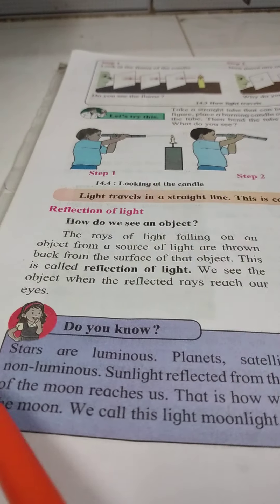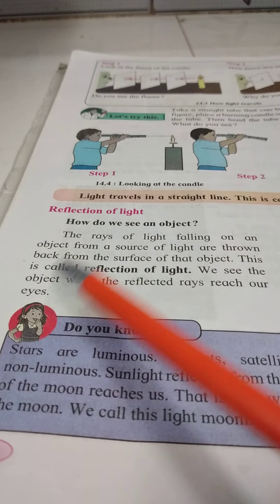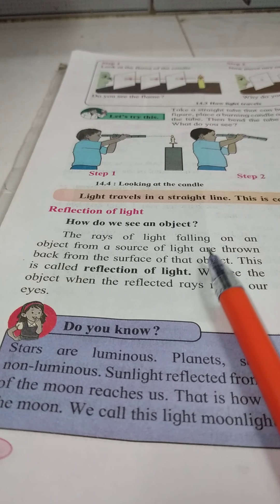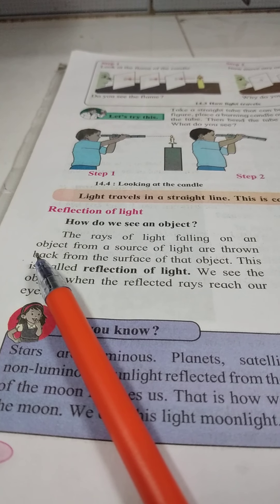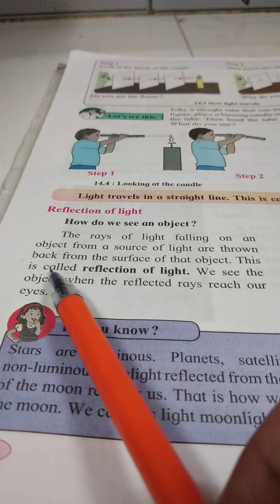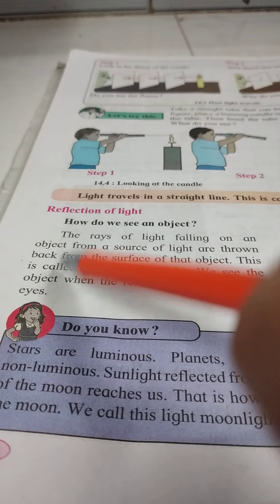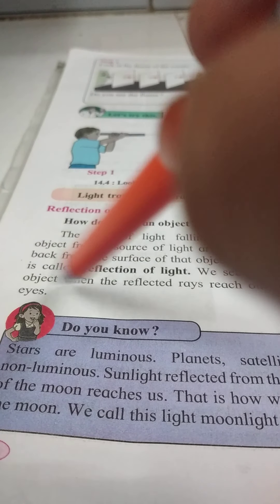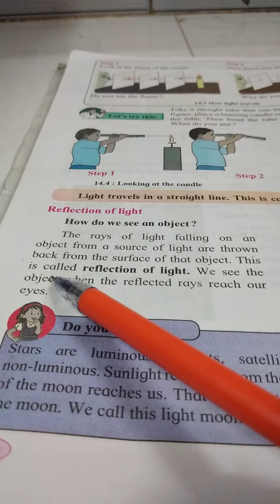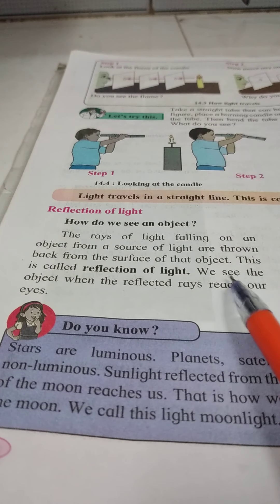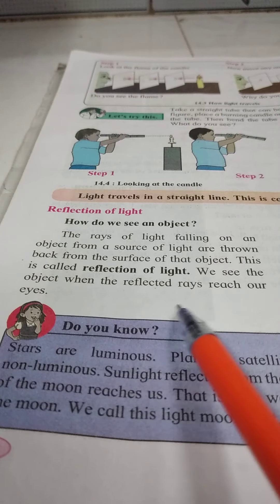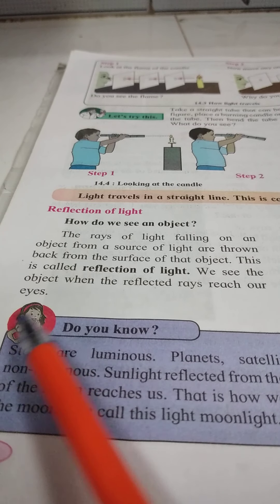Reflection of light. How do we see an object? The rays of light falling on an object from a source of light are thrown back from the surface of that object. This is called reflection of light. We see the object when the reflected rays reach our eyes.